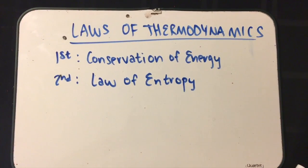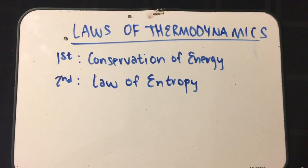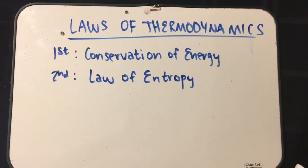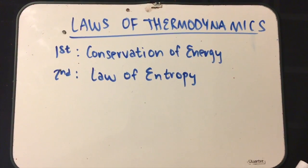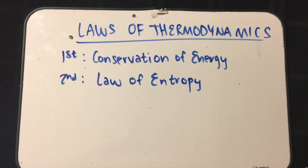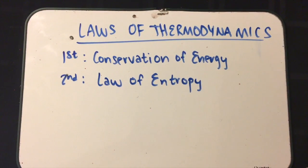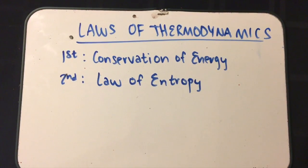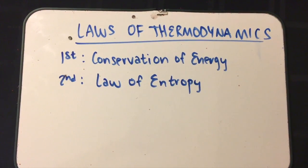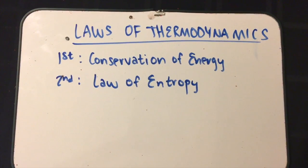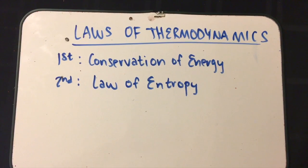Our second law covers the topic of entropy, which is also known as delta S. Entropy is the number of possible arrangements of particles within a system. This law, the law of entropy, basically states that the total entropy in the universe will always increase. Energy moves from hot to cold.